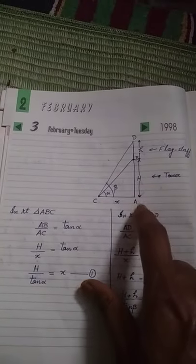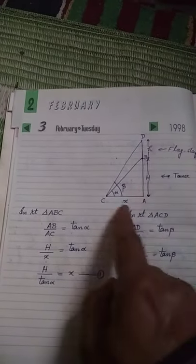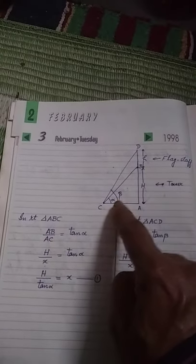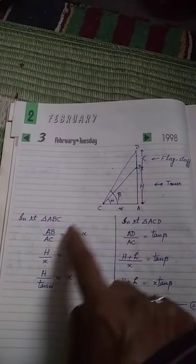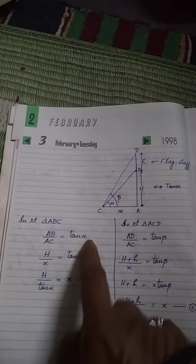Now, first of all, I am taking right triangle ABC. In that one, AB by AC. So perpendicular upon base will be equal to tan, and in this case alpha angle will be taken. So that will be tan alpha.